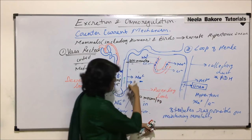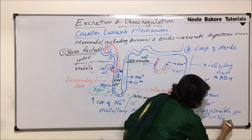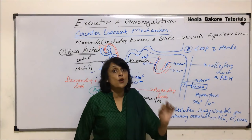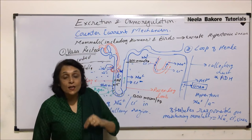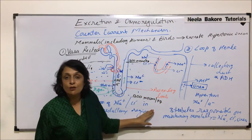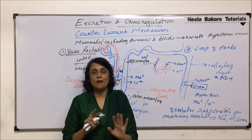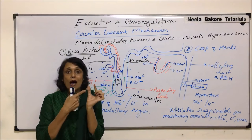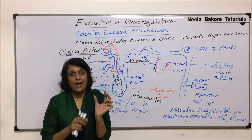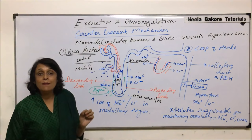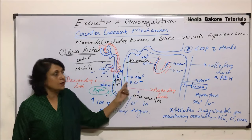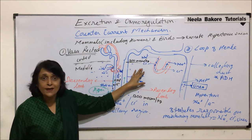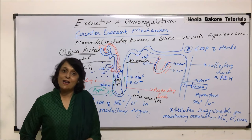Three solutes are responsible for maintaining this osmolality — this concentration difference: sodium ions, chloride ions, and urea. This is why urea was a low-threshold substance — some amount of urea is required to maintain the concentration gradient or osmolality. Counter-current mechanism is simple: there must be a tube in the form of a loop, and in the two arms the liquid flows in opposite directions. This maintains higher ion concentration in the medullary region. Two places where this occurs are vasa recta and loop of Henle, enabling humans, other mammals, and birds to excrete hypertonic urine.